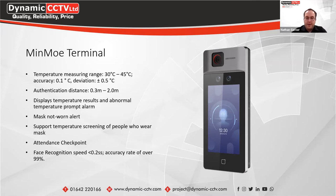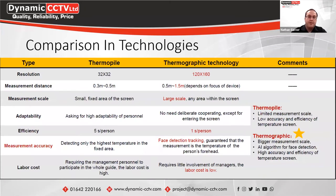When mounting the terminal, it must be in a room with a stable temperature and not near air conditioning drafts, as this can affect the accuracy of temperature readings. There are two main technologies: Thermapile, used by some third-party companies, which works at five seconds per person, and HikVision's MinMo unit which uses thermographic technology — measuring the whole screen — at one second per person. You can also use a card or key code instead of facial credentials.